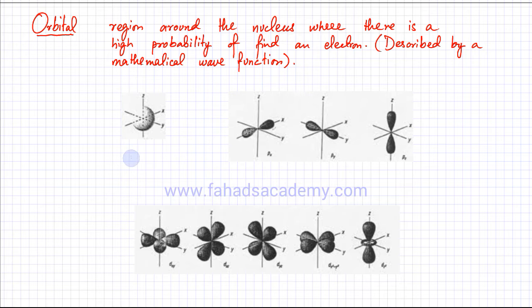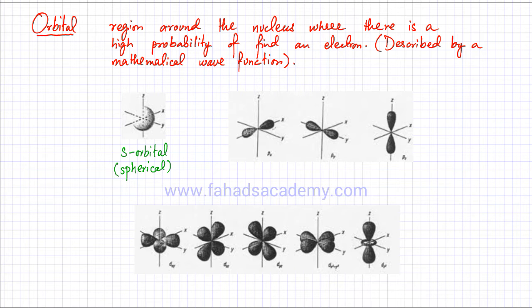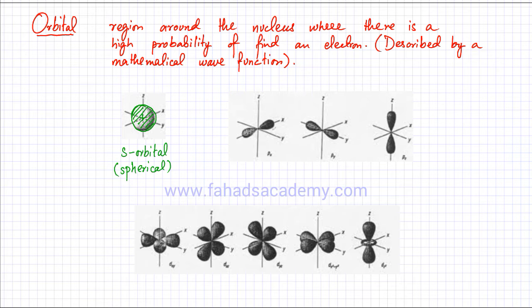We're going to start off with the first one, which is the S-orbital. The S-orbital is a spherical region — its shape is spherical as shown in the diagram. So if your nucleus is right at the center, there's going to be a spherical region around the nucleus where there's going to be a very high probability of finding an electron.